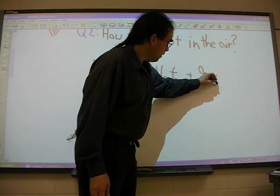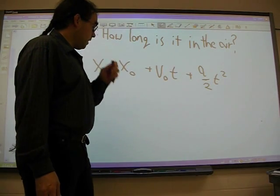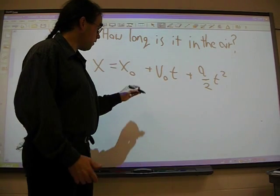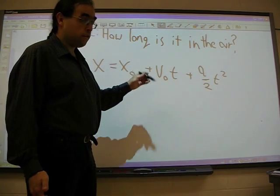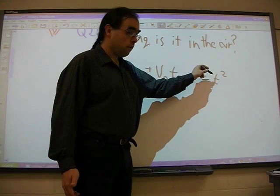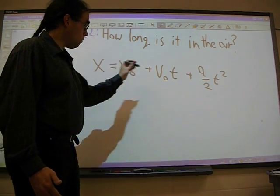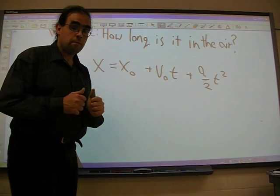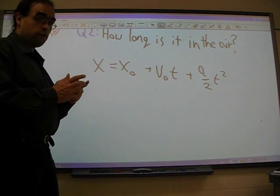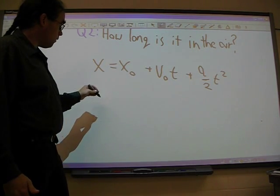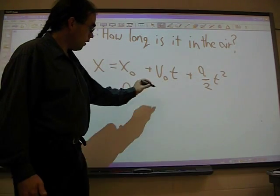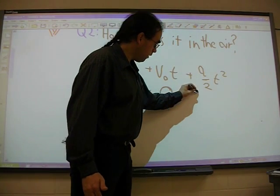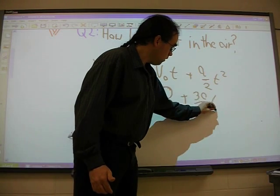And so we'll use our equation from our book for our distance formula. That's x equals x of zero, our initial offset, which is zero in this case because we're at ground level. Our initial velocity times t. Initial velocity is zero because we start at rest. Plus acceleration divided by two times t squared. And all these units end up being, after multiplications, in units of distance. Meters per second times second is meters. Meters per second squared times second squared is also in meters. So these will all add up.